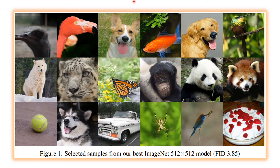In fact, in their paper, they showed that diffusion models can provide a smaller FID score than GANs on image synthesis. The FID score is a popular metric for assessing the performance of image generation models. A lower FID score indicates better quality and diversity in generated images. In other words, a smaller FID score indicates more realistic images.